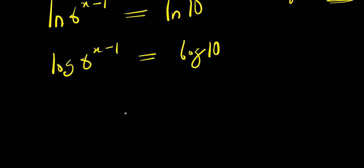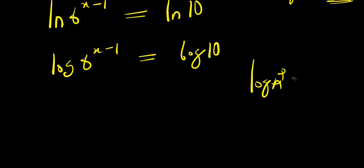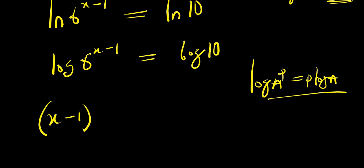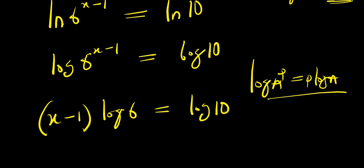Good. Now, if you have log a to the power b, this equals b times log a. So I apply that here: that will be x minus 1 times log 6 equals log 10.